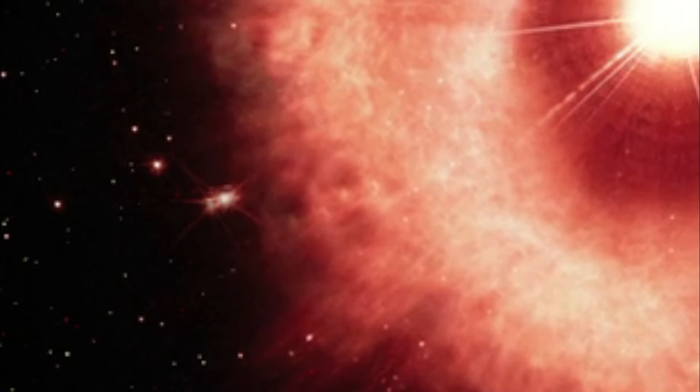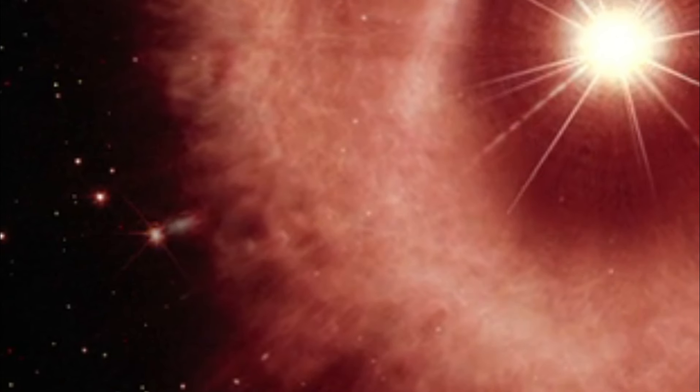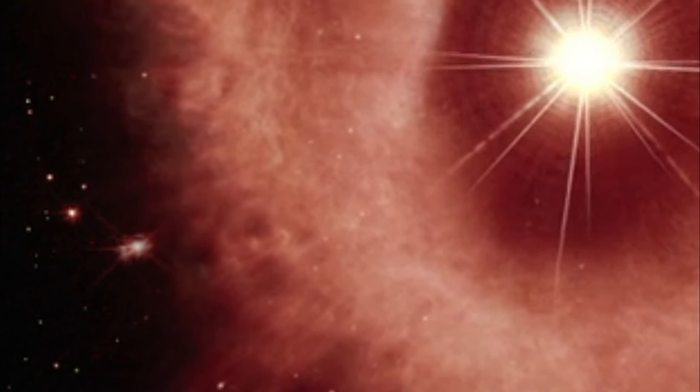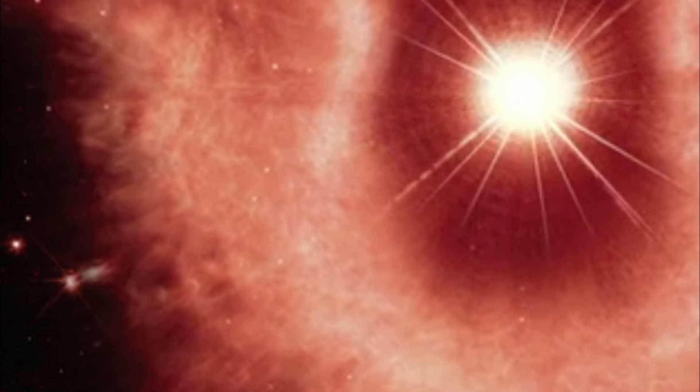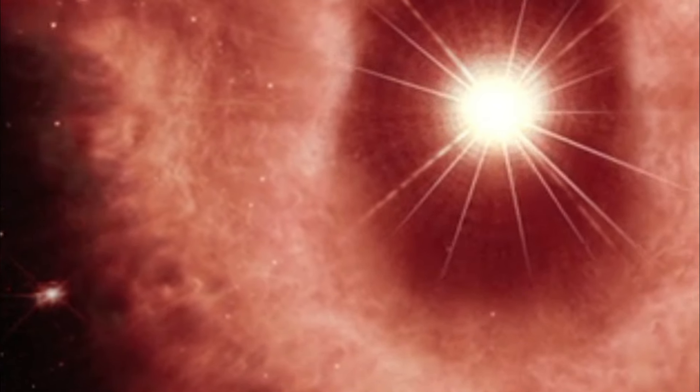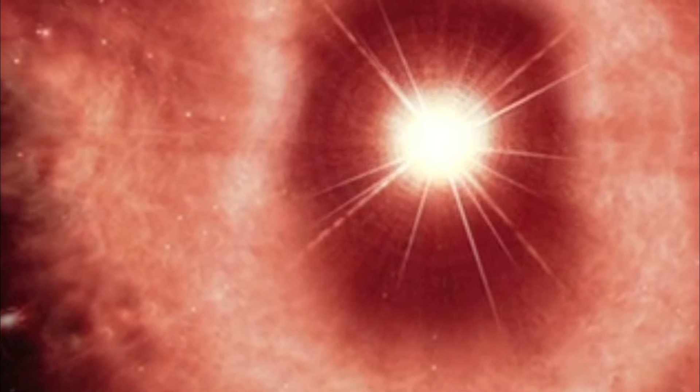Scientists using the James Webb Space Telescope have made a monumental discovery, finding evidence for a neutron star at the heart of a young supernova remnant. NASA's James Webb Space Telescope has found the best evidence yet for emission from a neutron star at the site of a recently observed supernova, writes NASA in a press release.